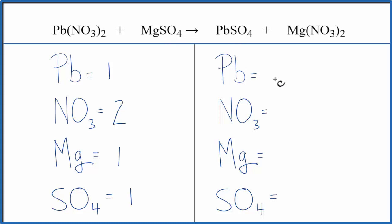On the product side, we have one Pb, we have one nitrate times two, so we have two of those, one Mg, and then one sulfate. And you can see, looking at these numbers here, they're the same, and this equation is balanced.